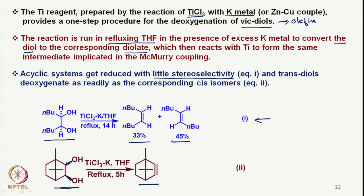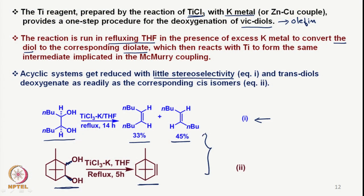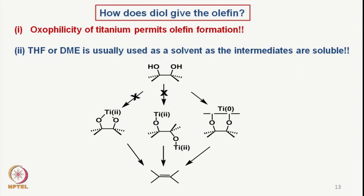When the reaction is carried out such that vicinal diols are allowed to react under the same conditions in which the diol was originally formed but now with heating, the corresponding olefin forms. These two cases are very good indications of how the reactions may proceed and therefore reflect on the mechanism of the reaction. A lot of work has been done by McMurry and others on how the diol gives the olefin.